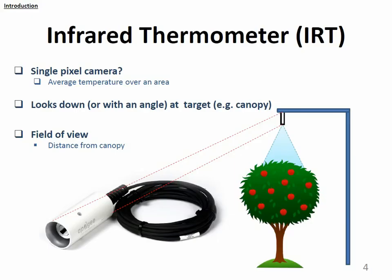I would like to call a thermal infrared thermometer a single-pixel camera. It gives us an average temperature over an area of a target. How we install it depends on the distance and the field of view of the sensor.